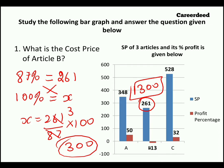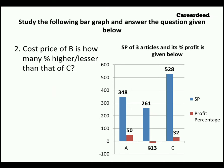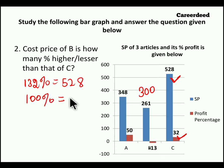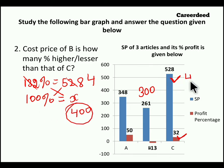Hope you understood the problem. Moving to the second problem: cost price of article B is how much percentage higher or lesser comparing to article C? We know article B is 300 rupees from the previous problem. Now we have to find the cost price of article C. We know selling price is 528 rupees with profit 32 percentage, so 132 percentage is nothing but 528. If 132 percent is 528, we have to find 100 percentage. Cross multiplying, you get 132 into 4 equals 528, so 4 into 100 equals 400. So 400 is the cost price of article C.